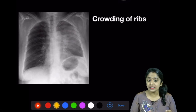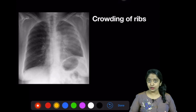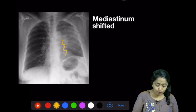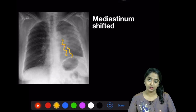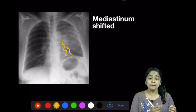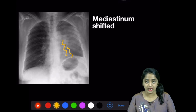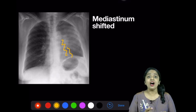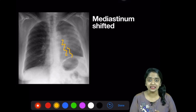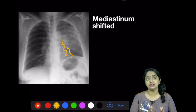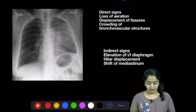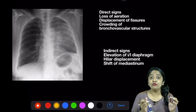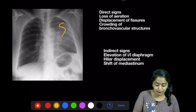Further, looking at the mediastinum — what can you make out? The mediastinum is shifted. Look at the left side of the heart — you cannot really appreciate the left side of the heart; it seems as if it has been cut off. This is because the mediastinum is shifted to the left side. The heart has got rotated posteromedially — that's why you get this particular appearance.